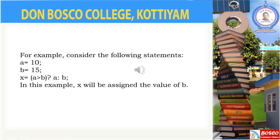Here is an example to explain the conditional operator in detail. We have assigned two values for a and b. That is, a is equal to 10 and b is equal to 15. The next statement is a conditional statement: x is equal to a greater than b, question mark, a, colon, b.